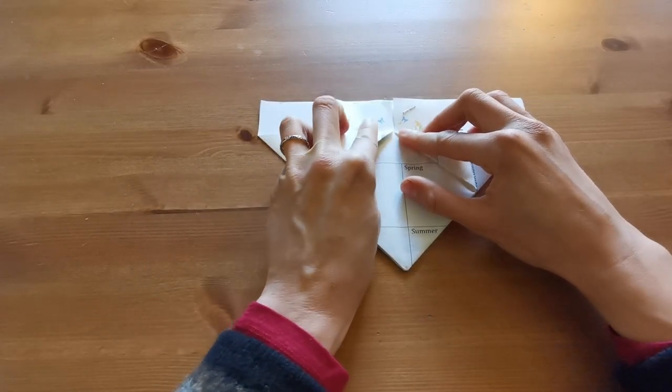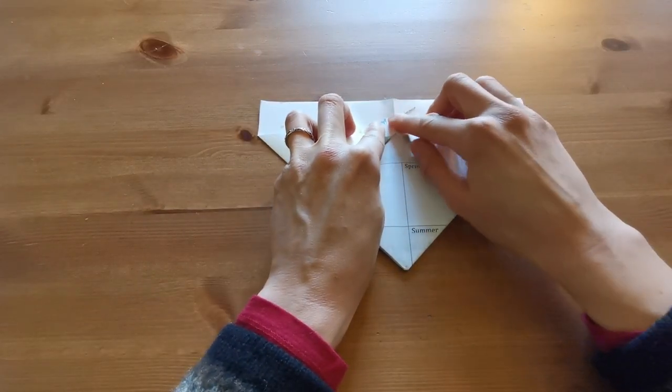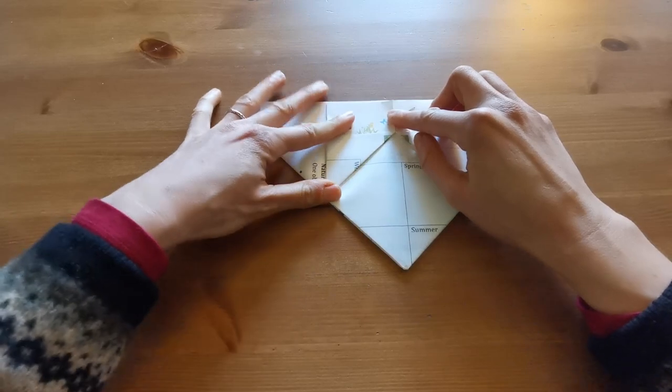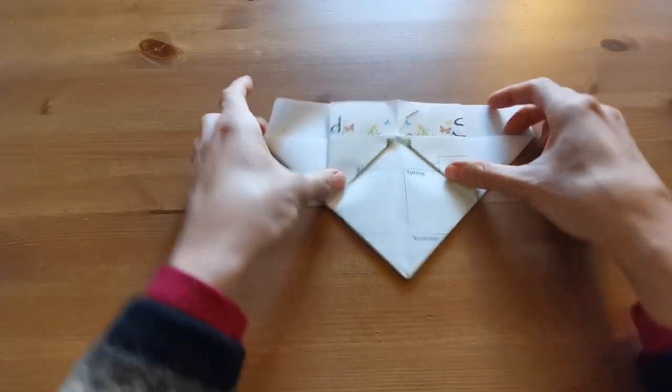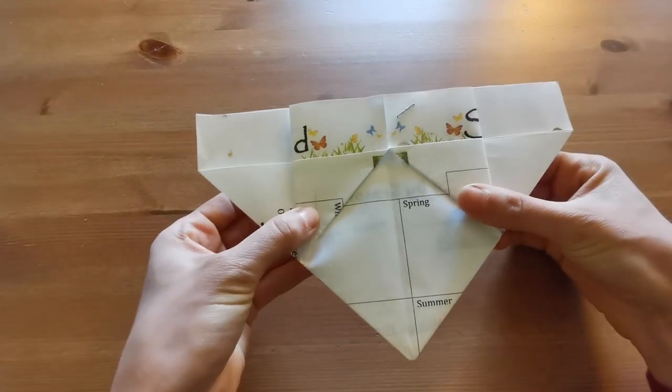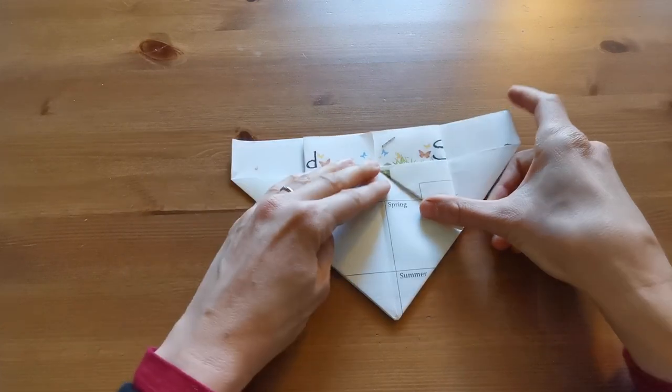Now you're going to do the same thing with the left side, leaving the mirrored left side behind it in place. Make sure your pot looks like this so far, and if it doesn't, then unfold it and watch the first part again.